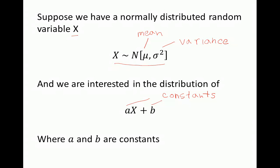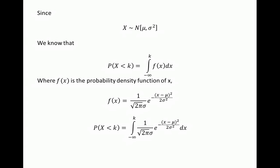For example, we could be interested in the distribution of 5 times X plus 6. We know that X is normally distributed, so we know how to derive its probability function. The probability of X being less than K equals the integral from negative infinity to K of f(X) dX, where f(X) is the probability density function of X. For a normally distributed random variable, f(X) equals 1 over square root of 2 pi times sigma, times e to the power of negative X minus mu squared over 2 sigma squared.